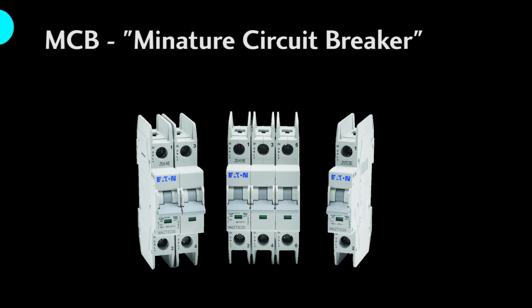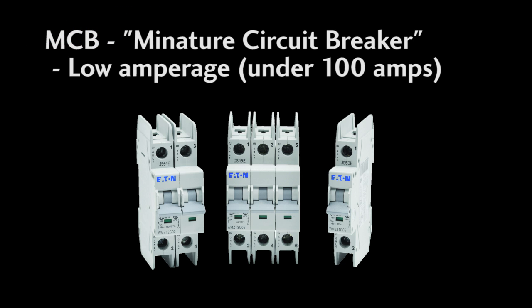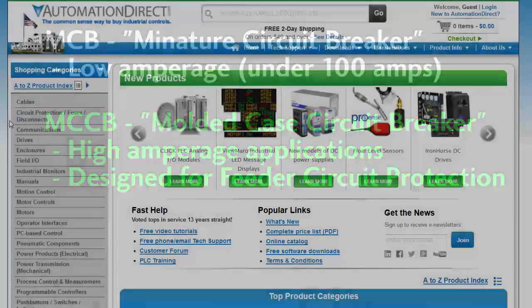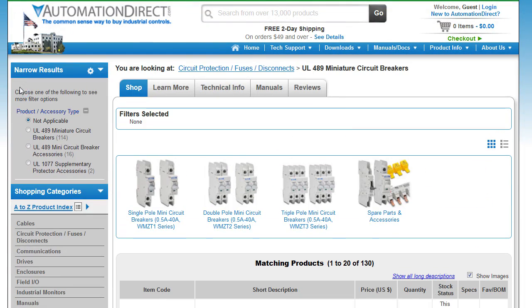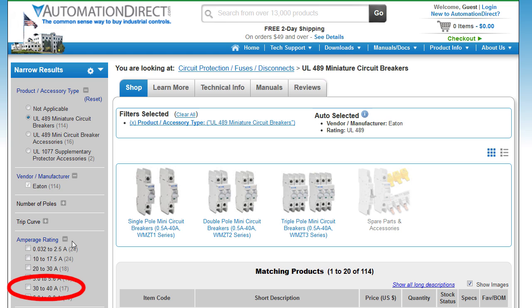MCB stands for Miniature Circuit Breaker and it is used in low amperage applications on branch circuits in the under 10s of amps range. Looks like Automation Direct's MCBs currently go up to 40 amps for example.